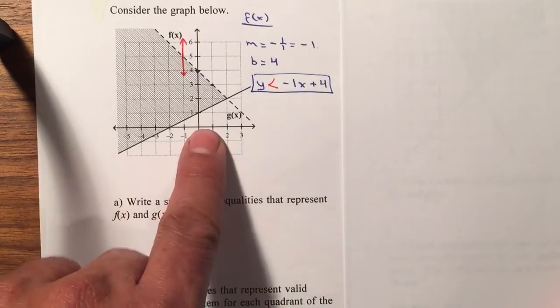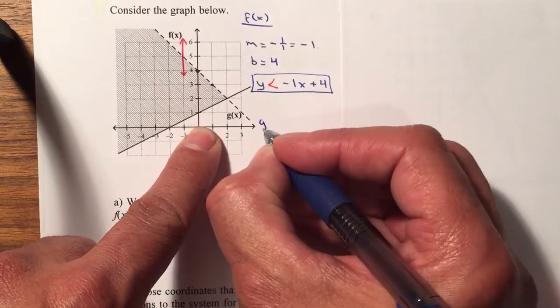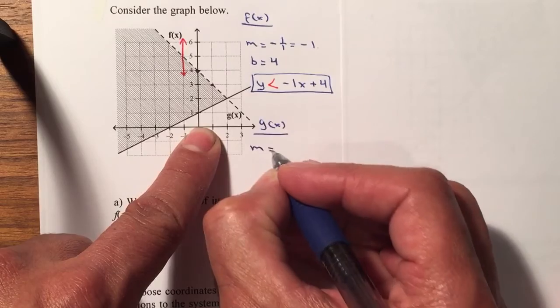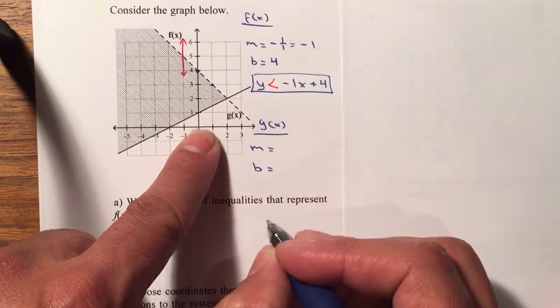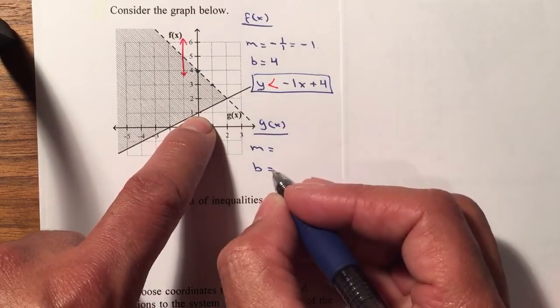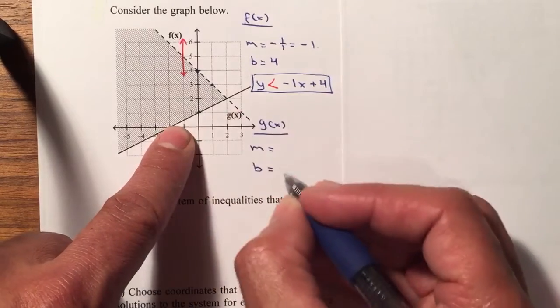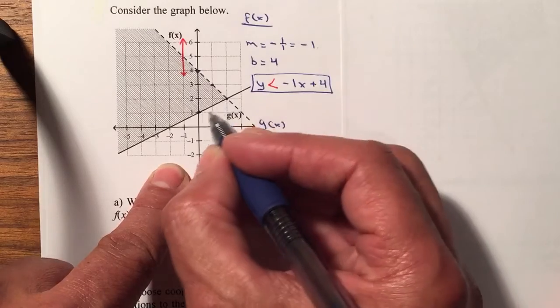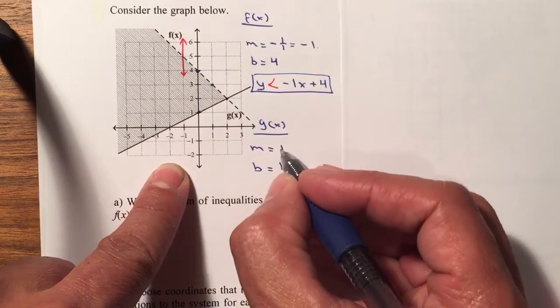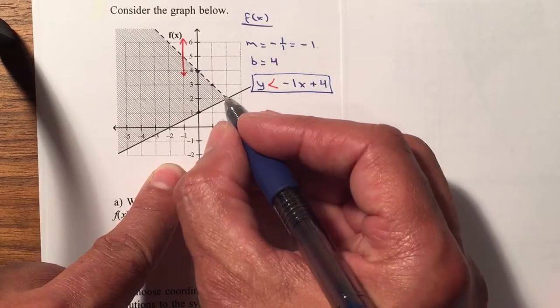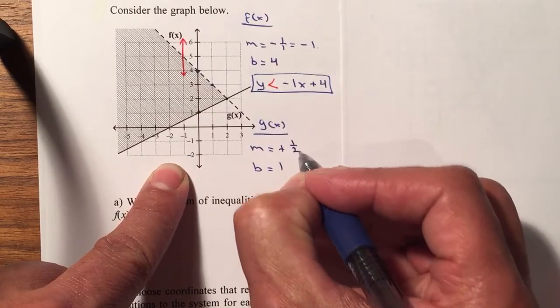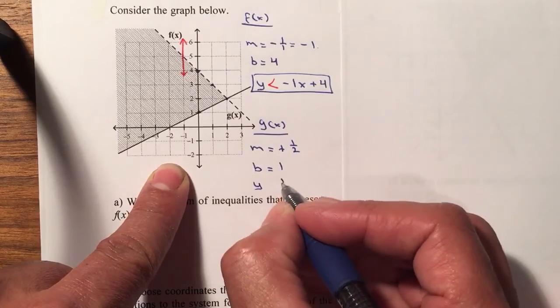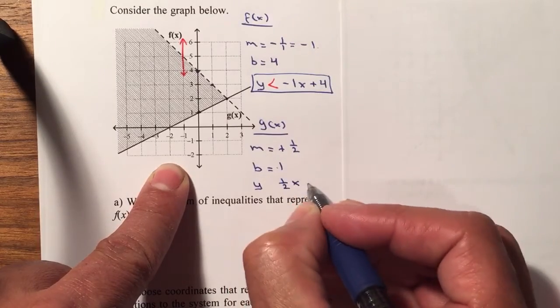I'm going to do exactly the same for g of x. I'm going to find my slope and my y intercept. First my y intercept is positive 1, it crosses at 1. And my slope, notice that my next point is here, so it's going to be positive since the line is going up. Up 1 and over 2. So therefore my equation will be y equals 1 half x plus 1.